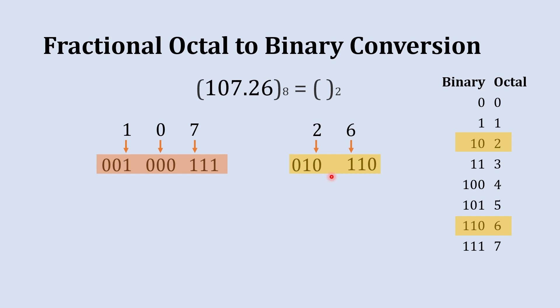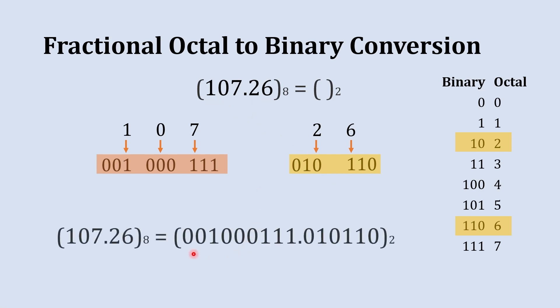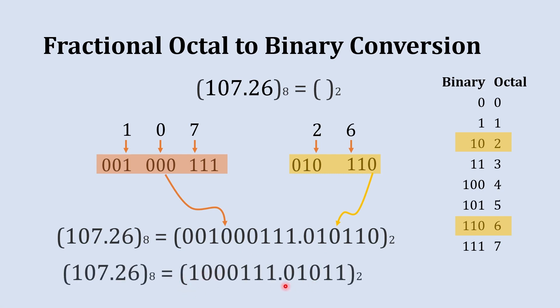Finally, we combine both numbers. The binary equivalent to the octal number 107.26 is 001 000 111 . 010 110. This is the whole number part and this is the fractional number part. You can simplify further by ignoring the leading two zeros and the trailing zero.